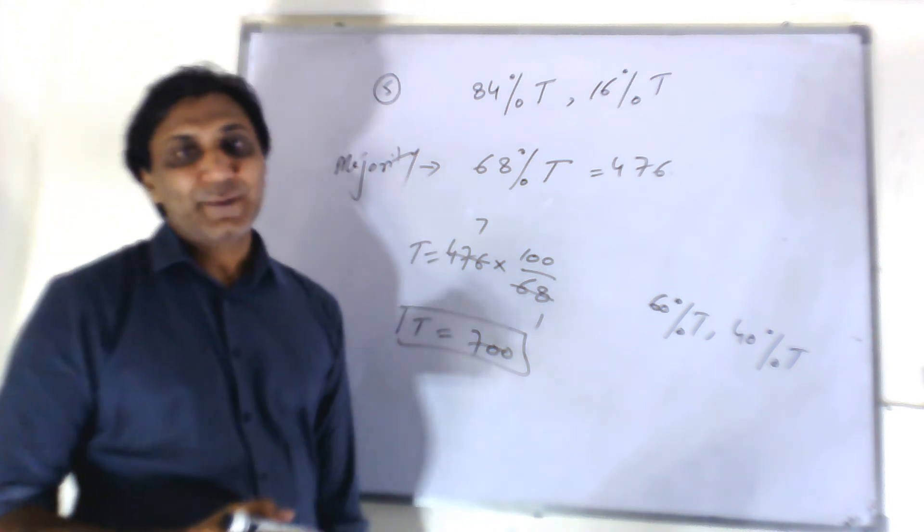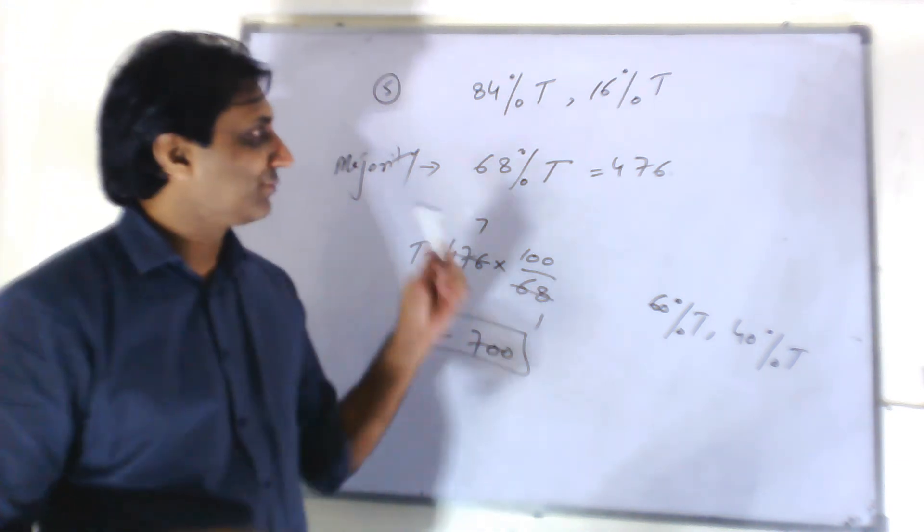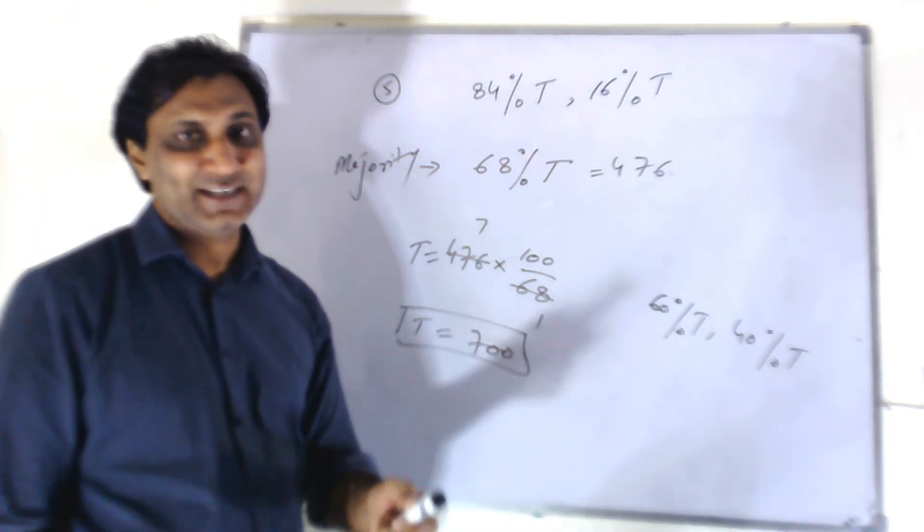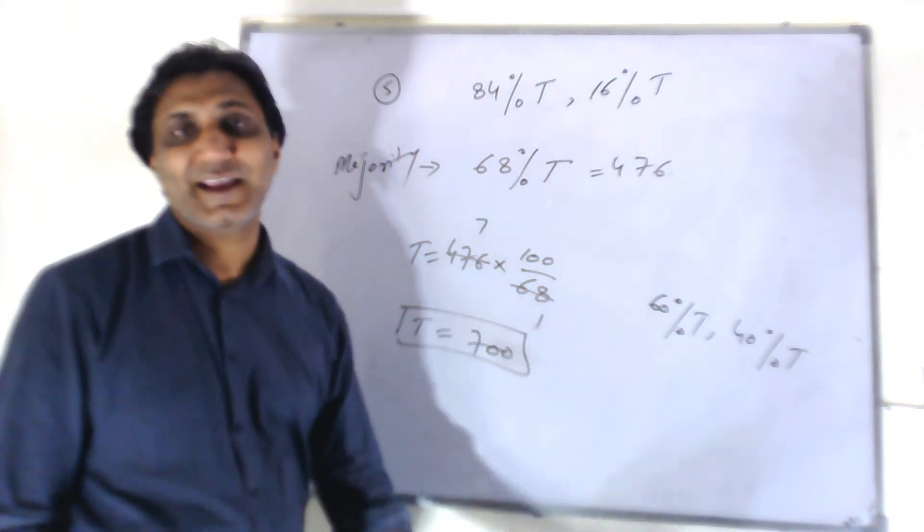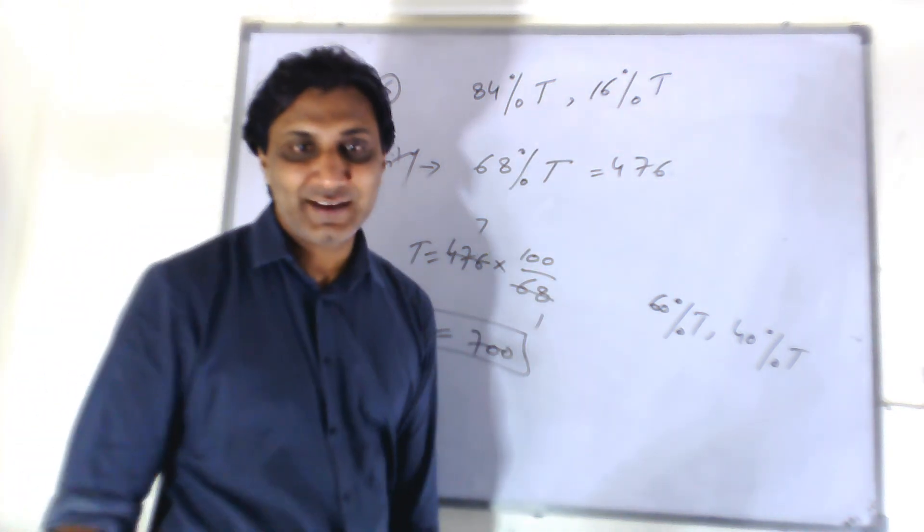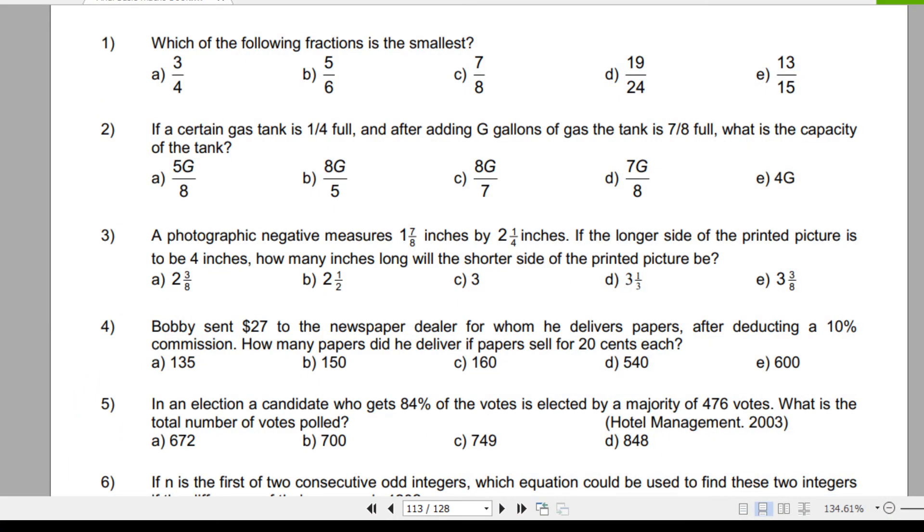Total number of votes is 700. Be careful with this type of question. They are always tricky. And you use 84% instead of taking the difference. Be very careful. Be very vigilant. The answer to this question number 5 will be 700, that is B.